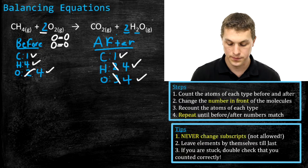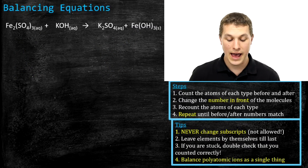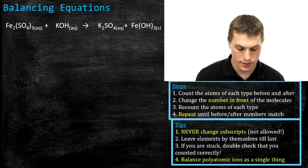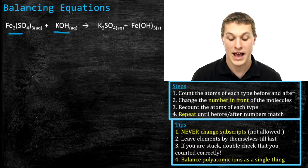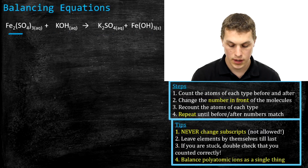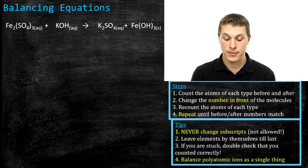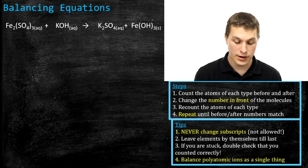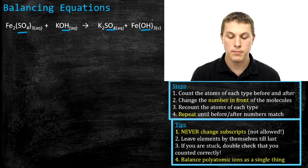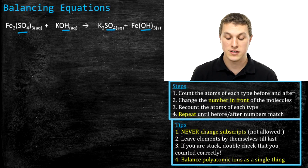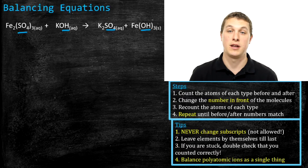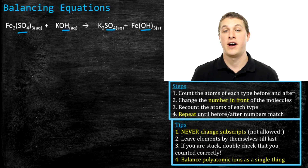Let's do another example. Here I have a more complicated reaction: iron sulfate combined with potassium hydroxide gives potassium sulfate and iron hydroxide. One tip: when you see polyatomic ions throughout your equation — like sulfate and hydroxide — you can balance those as chunks. You don't need to worry about the individual sulfur and oxygen atoms in each sulfate; just make sure you have the same number of sulfate groups before and after, which simplifies the balancing procedure.